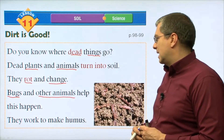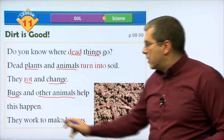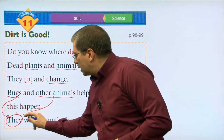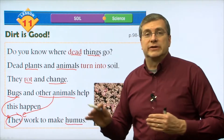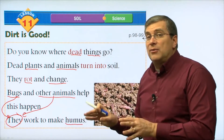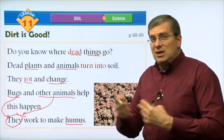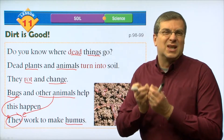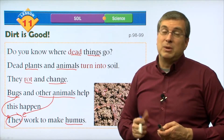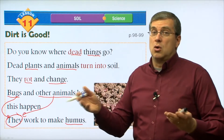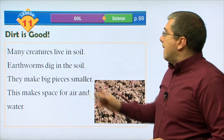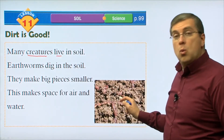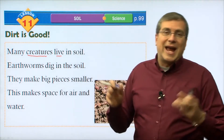Soil has minerals, water, and air — those three things are in soil. And these three things — minerals, water, and air — are food for plants. If you are a plant, your food is minerals, water, and air. That's what plants eat.